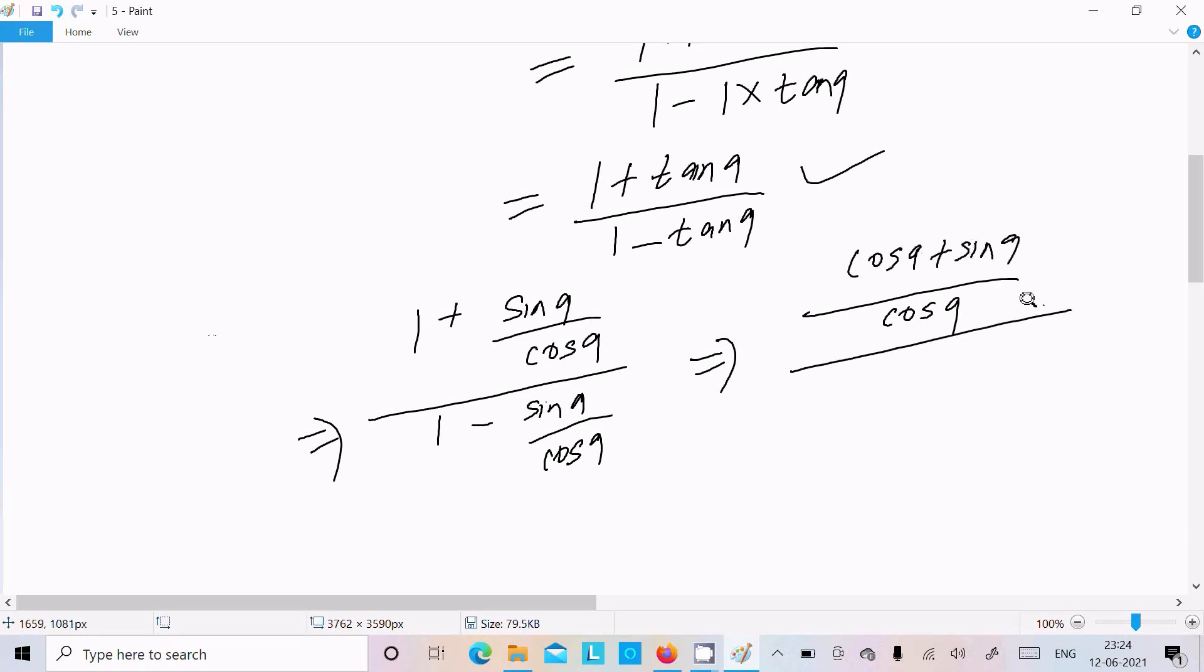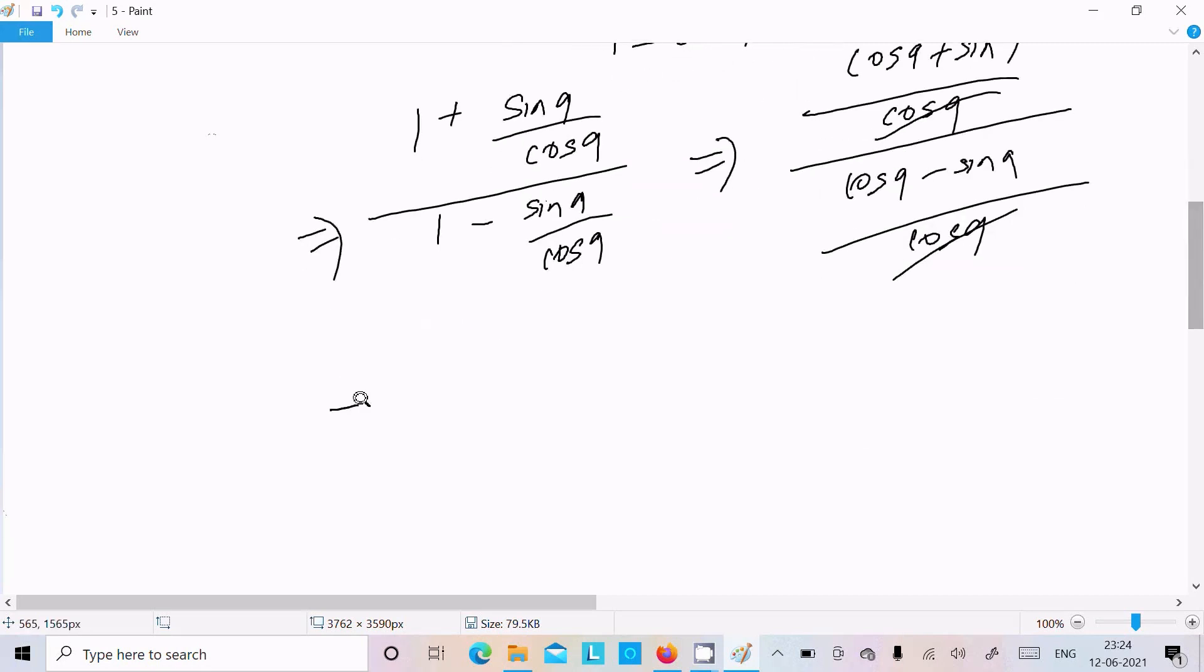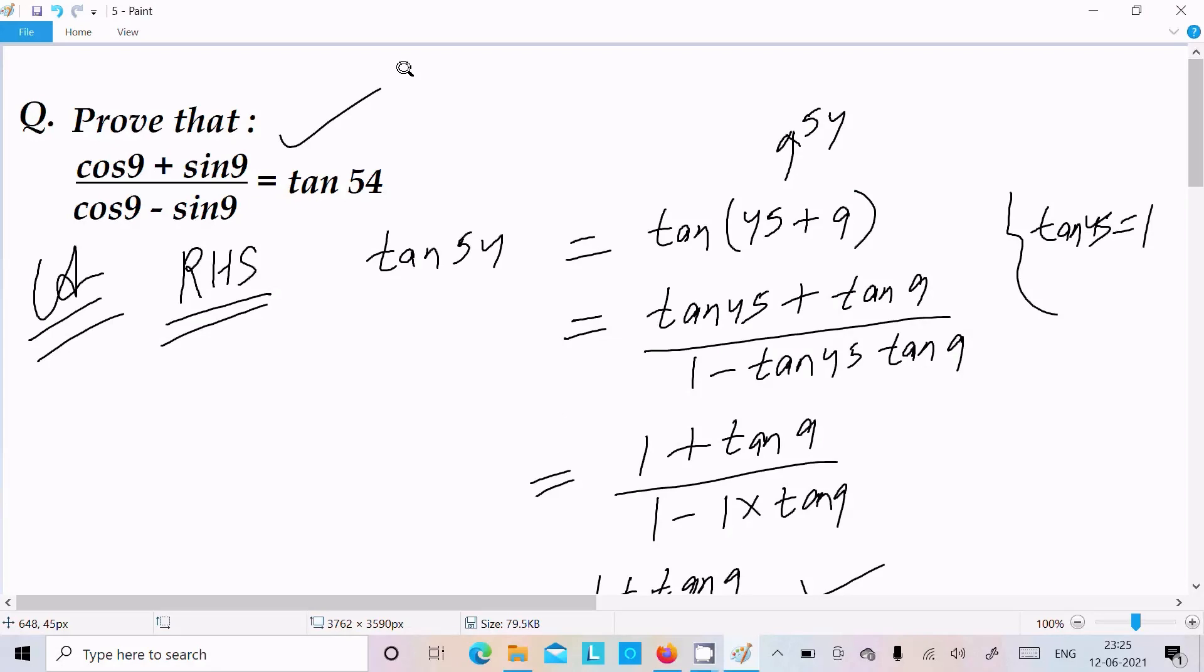And here cos9 minus sin9 divide by cos9. This cancels and here you can get cos9 plus sin9 divided by cos9 minus sin9. So you can see it's the LHS, it's equal to LHS.